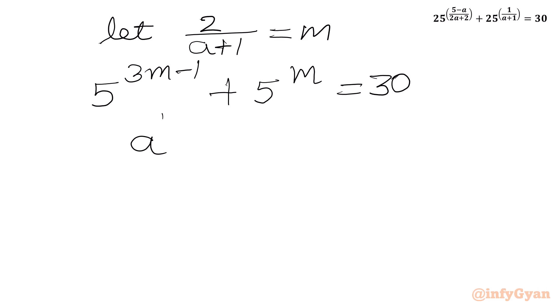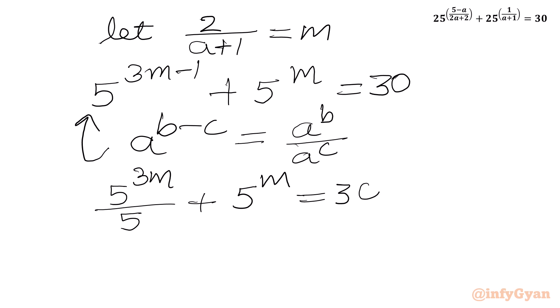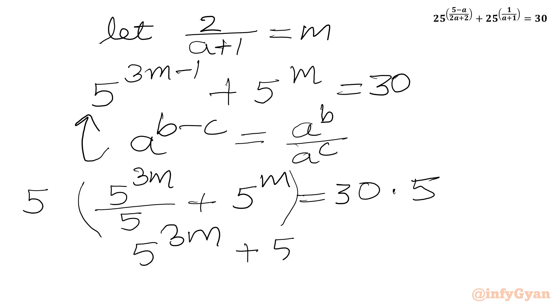Now I can write the exponent property: a to the power (b minus c) equals a to the power b over a to the power c. Applying this, we get 5 to the power 3m over 5 to the power 1, plus 5 to the power m, equal to 30. Now we multiply both sides by 5, so we get 5 to the power 3m plus 5 times 5 to the power m equal to 150.